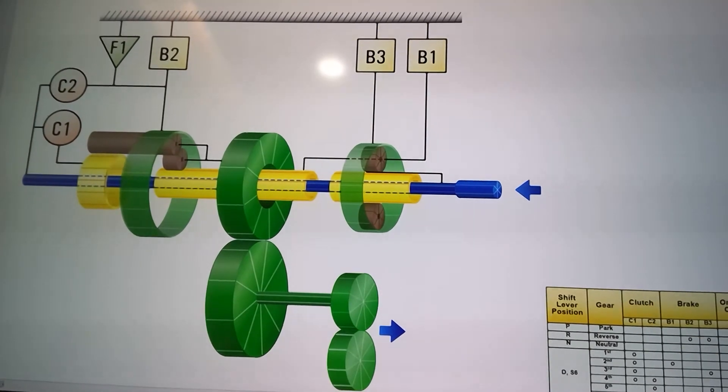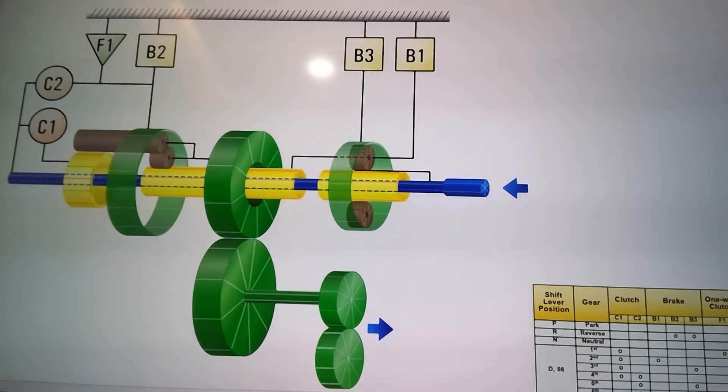Really just two clutches, three brakes, and one freewheeling clutch, which we're going to show you how that works.